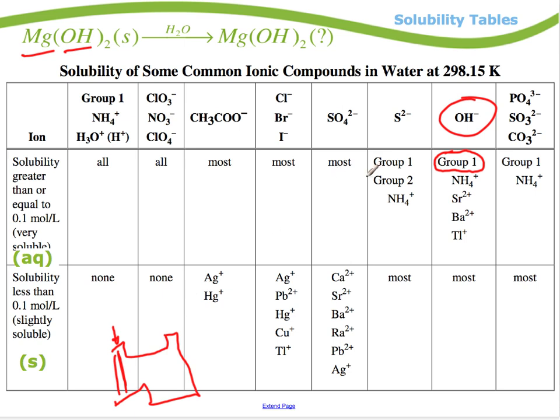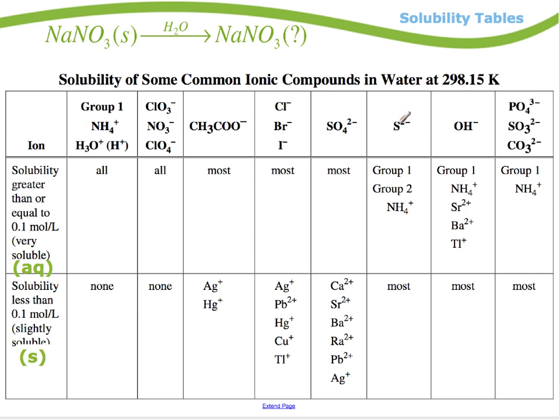You'll find magnesium is not in there and neither is any one of these. So magnesium must be in this section, making magnesium hydroxide a solid when you dump it in water. Okay. Hopefully you're catching on. Let's try another couple. Again, pause. Try it on your own. Come back. See if you're right.